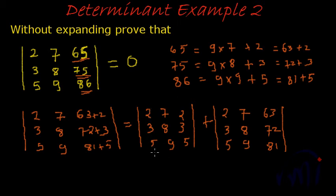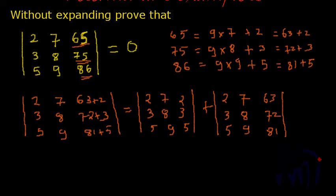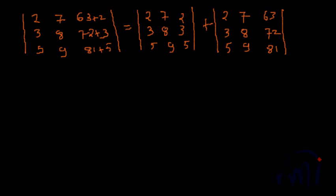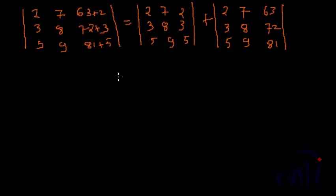So the last column of the remaining determinant can be written as 7 times 9, 8 times 9, and 9 times 9.